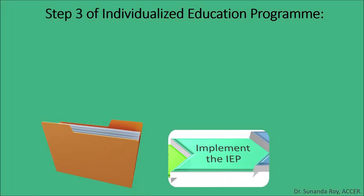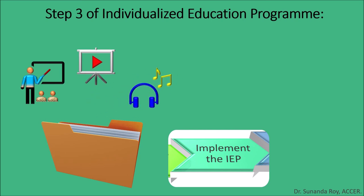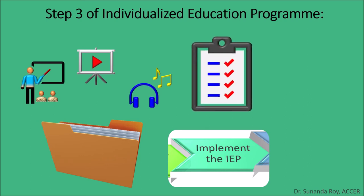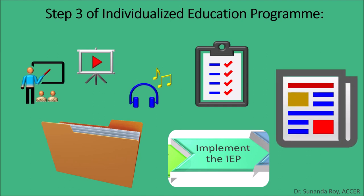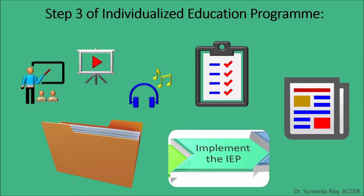Step 3 is to implement the IEP. The program is implemented using the various activities planned in the IEP. The teacher may use instructional strategies like remedial teaching or additional audio-visual aids as per the needs of the student. The progress of the student is measured through both formative and summative assessments done periodically to keep a check on the student's achievements. Based on the information obtained, the IEP is adjusted in terms of goals, expectations, strategies, and supports as necessary.